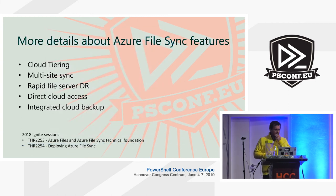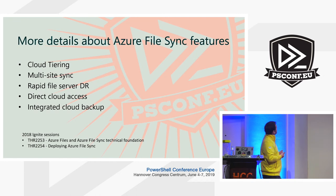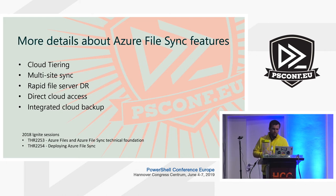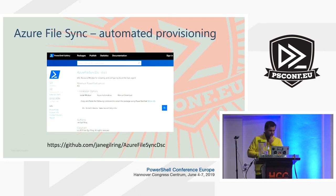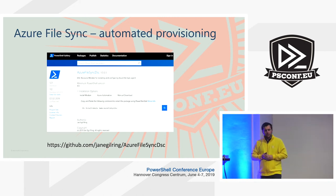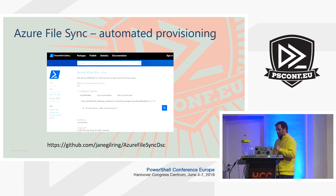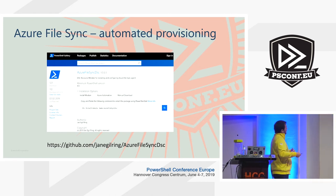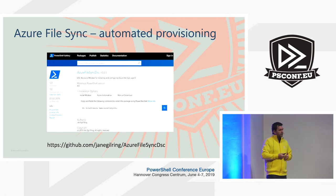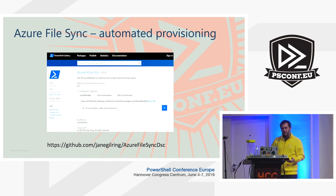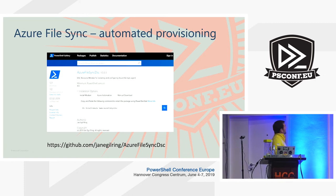I won't spend more time on Azure File Sync as a feature. If you want additional details, check out the Ignite sessions. Now I'll use the last 15 minutes on the Azure File Sync DSC module I created. On the PowerShell Gallery there's a PowerShell DSC resource called AzureFileSyncDSC, which handles registering the agent and adding it as a server endpoint to a sync group. Combined with the existing package resource to install the agent, you can put these together in a DSC configuration to fully automate the process.